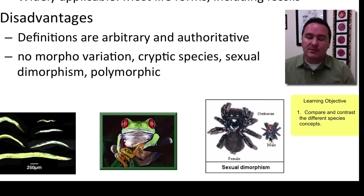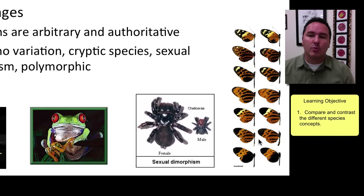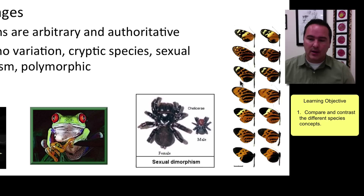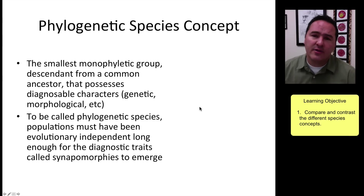Many species have sexual dimorphism, where the female and male look very different — you might see two spiders and think they're two species when there is only one. Some species are also polymorphic. For example, students might propose seven species from a set of butterflies, but it turns out there are actually only two species — each with seven different morph types that mimic each other.